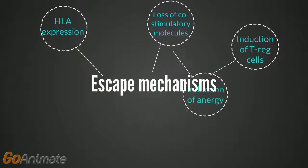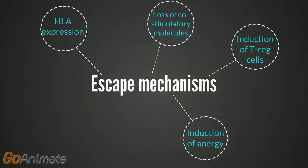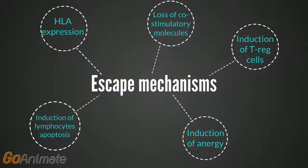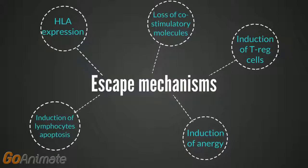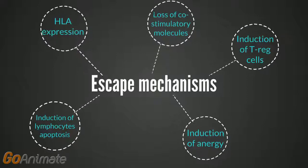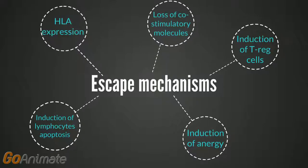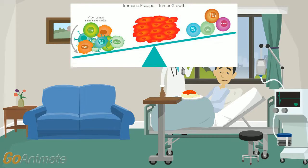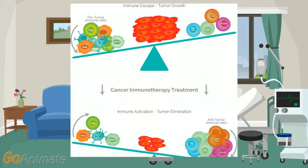Secondly, the tumour cells can, through cell surface antigens or antigen-antibody complexes, induce the production of T-regulatory cells which suppress the immune response and induce anergy in other T-lymphocytes. A third mechanism is the induction of lymphocyte apoptosis. Targeted immunotherapies based on immune escape mechanisms have been developed and proved to work synergistically to target cancer cells.